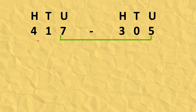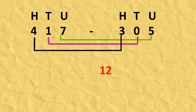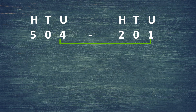Let us solve an example: 417 minus 305. Units place numbers are 7 and 5, so 7 minus 5, we get 2. Tens place numbers are 1 and 0, so 1 minus 0, we get 1. Hundreds place numbers are 4 and 3, so 4 minus 3, we get 1. So the answer will be 112. 417 minus 305 is equal to 112.